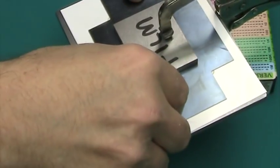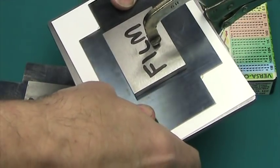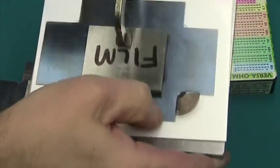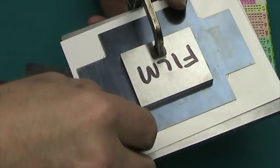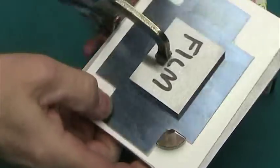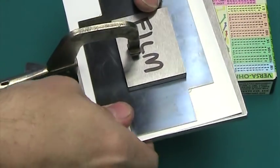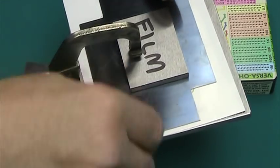And actually if you do it slowly, you can hear it click through the film and then the bottom sheet also. But we don't really need to go through the bottom sheet, we just need to go through the film. Slide it in, click. Slide it in, click. And there we have it.